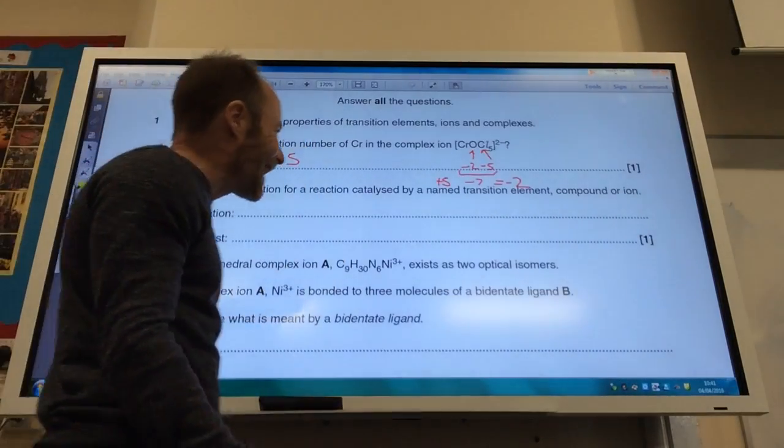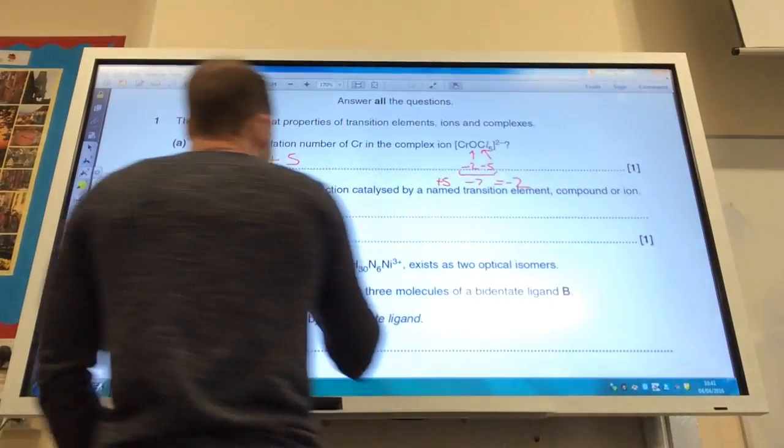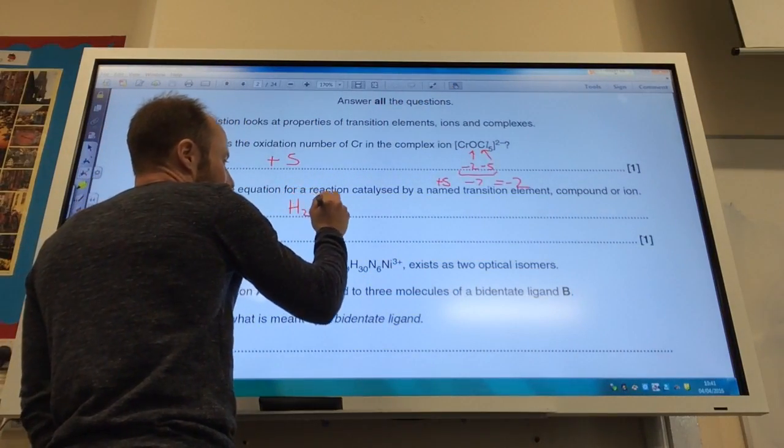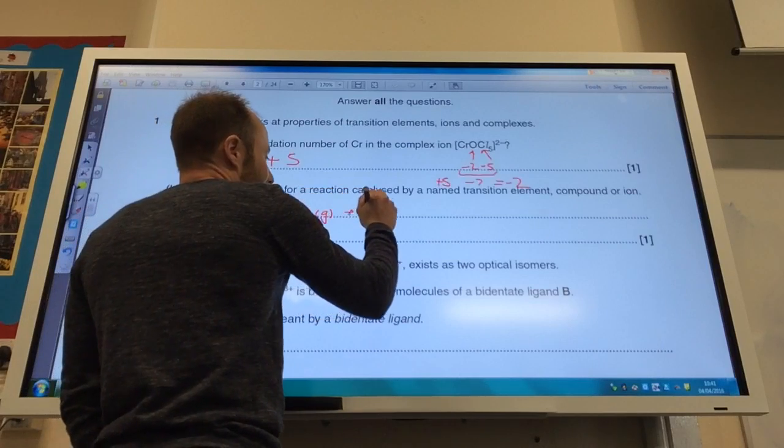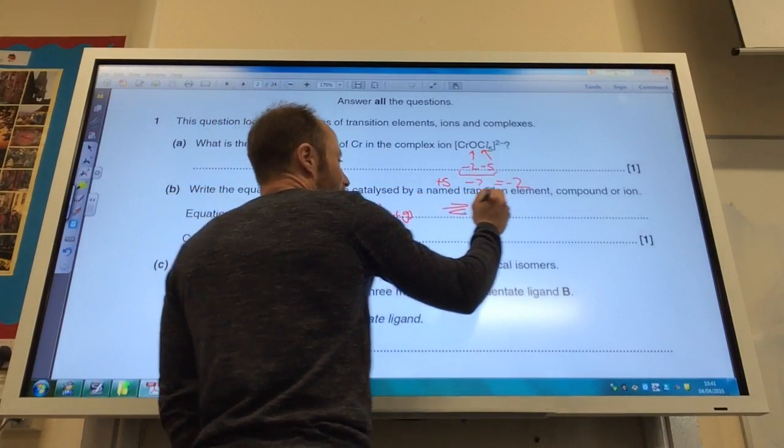Write an equation for a reaction catalyzed by a neutral transition element, iron. I think the most obvious one really, but you may think differently, is our old favorite, the Haber process.